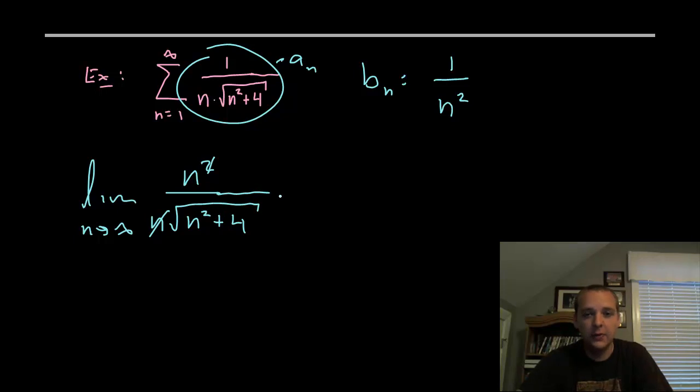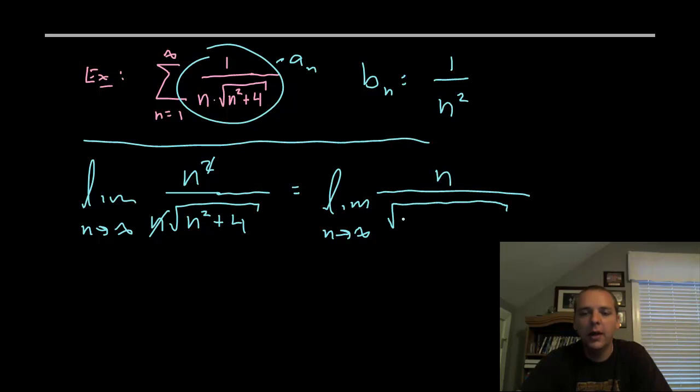Now you roughly have n over the square root of n squared. To finish this off, you actually need a little bit of an algebra technique. Limit n goes to infinity. Okay, I need to pull an n out of this radical somehow to cancel with this n. Now obviously you can't just factor things out however you want. The square root makes things a little more difficult. So I'm going to factor an n squared out of these two terms, and I'll be left with one plus four over n squared.